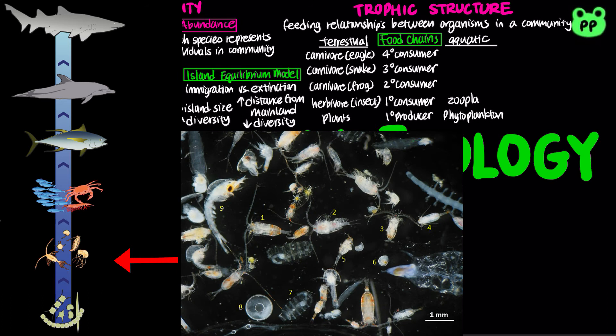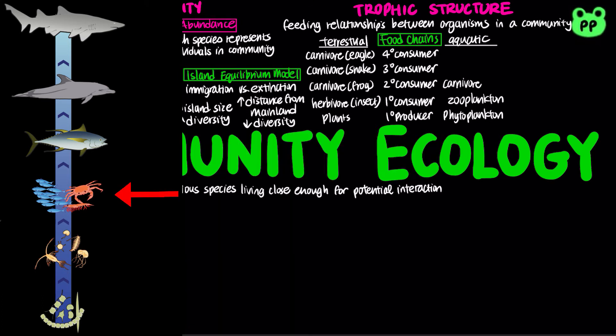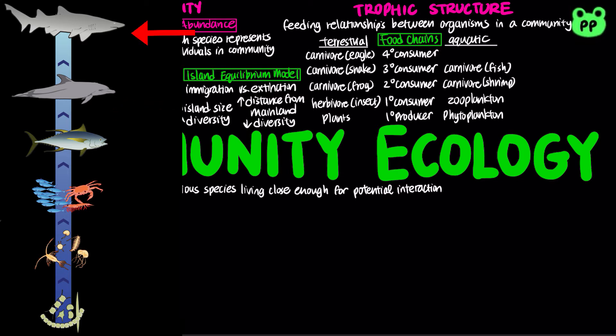An example of an aquatic food chain involves photosynthetic microorganisms such as phytoplankton as the primary producer, zooplankton as primary consumers, carnivores such as shrimps as secondary consumers, different types of fish as tertiary consumers, and sharks as quaternary consumers.